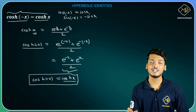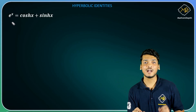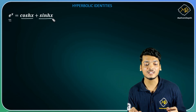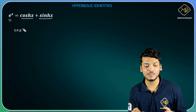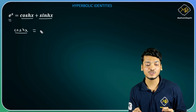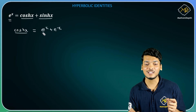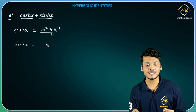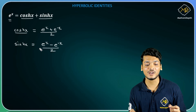So let's see the next identity. Next identity mein mujhe prove karna hai e raise to x is equal to cosh(x) plus sinh(x). Yahan par simply mujhe cosh(x) aur sinh(x) ki definition ko use karna hai. So cosh(x) equals e raise to x plus e raise to minus x divided by 2, and sinh(x) is equal to e raise to x minus e raise to minus x divided by 2.